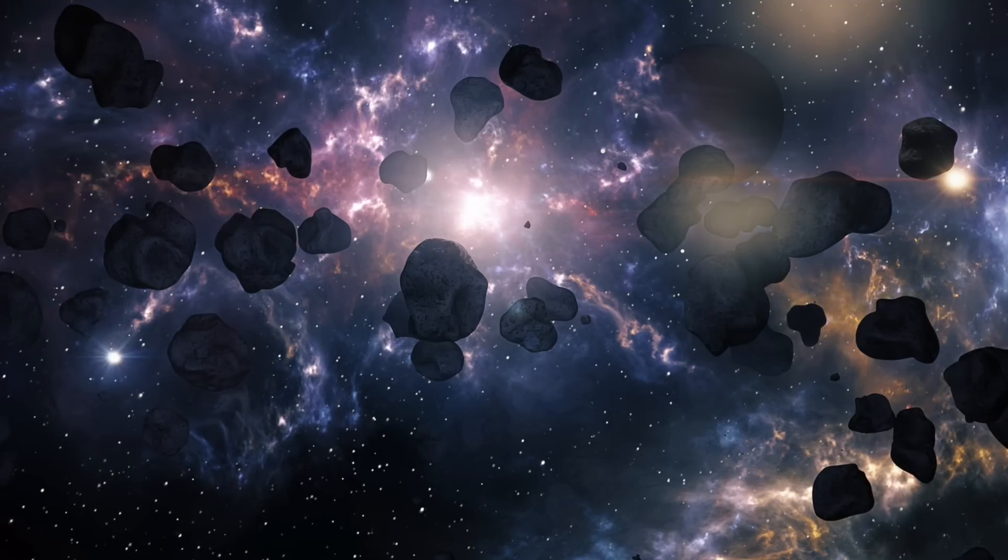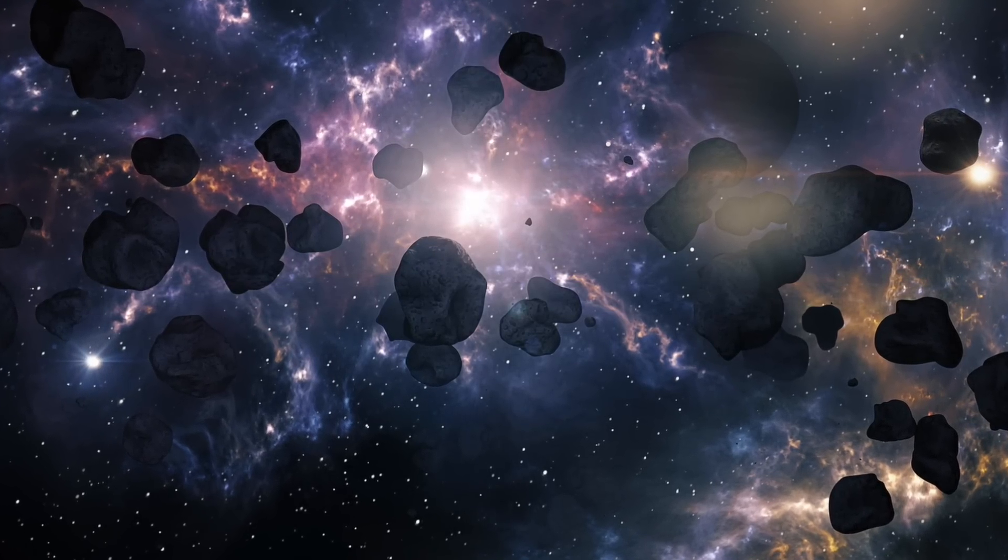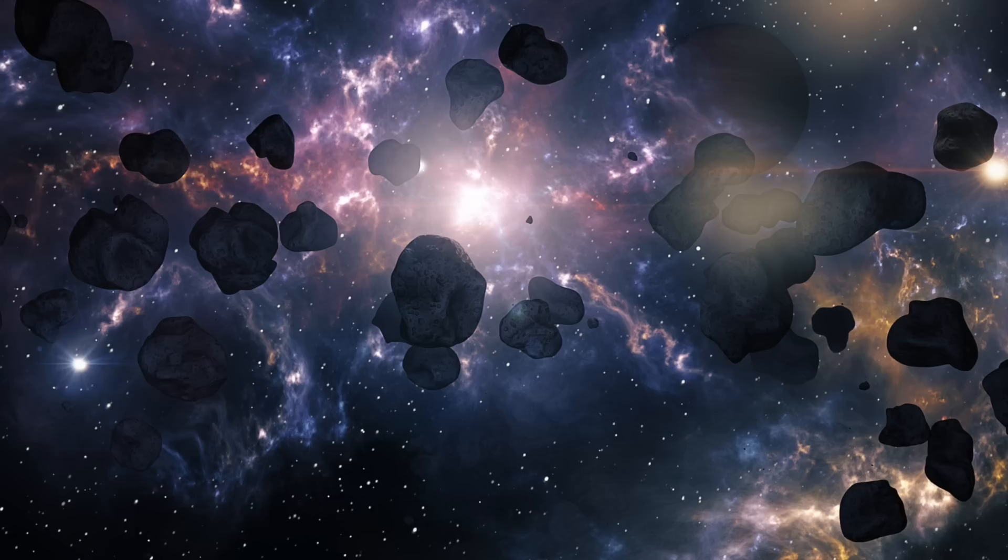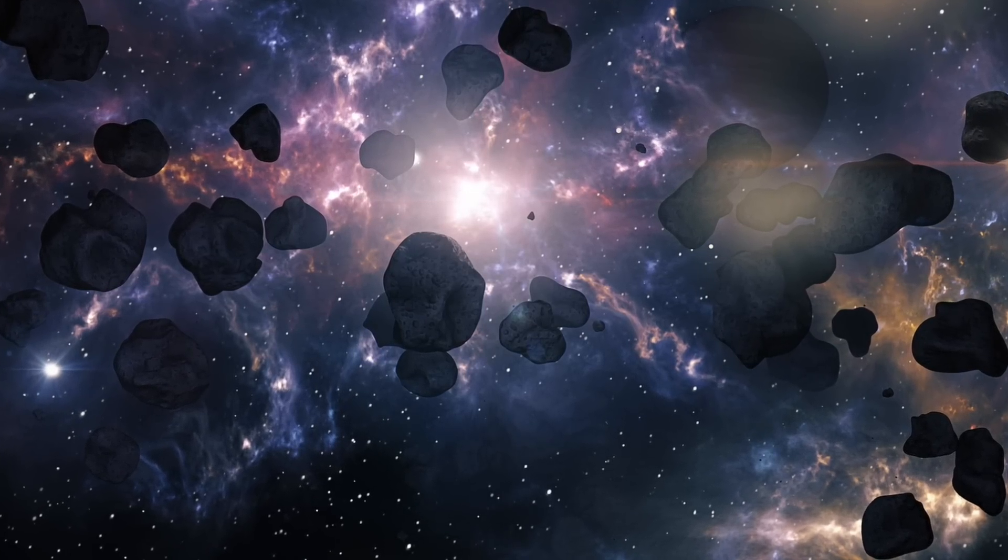Kuiper belt objects are clusters of ice, rock and dwarf planets on the outer edges of our solar system, and what is notable about them is the fact that rather than appearing randomly throughout the perimeter of the solar system, they appear to be orientated as though being pulled by the gravitational force of a small planet.